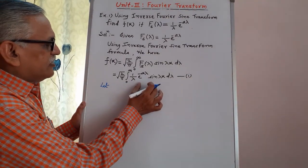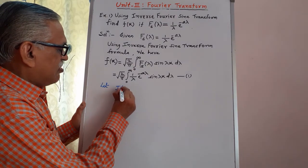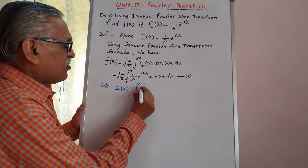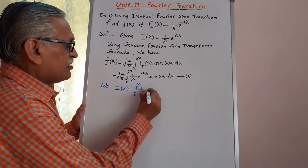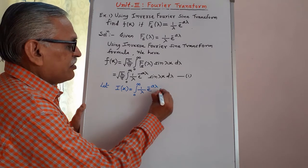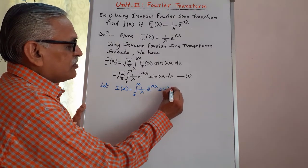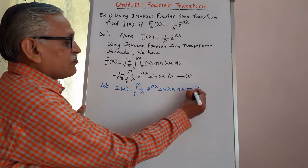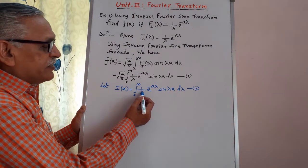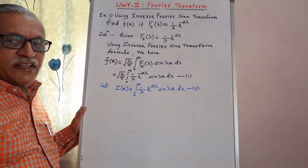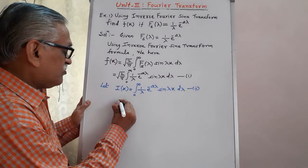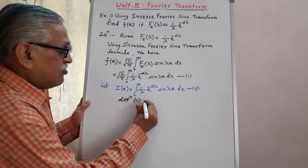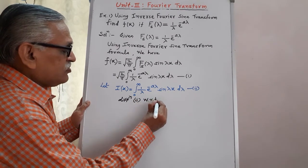Let this integral be called i of x. So i of x equals integration from 0 to infinity of 1 by λ, e raised to minus a λ, into sin(λx) dλ. We call this equation 2. It contains three terms of λ and that is why the integration is not directly possible. So we proceed by differentiating equation 2 with respect to x.